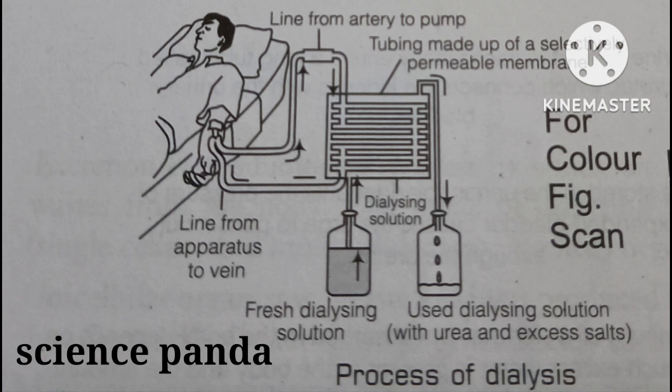During the process of dialysis, the patient's blood is passed through these tubes. As the blood passes, the waste products from the blood move into the dialyzing fluid by diffusion, and the purified blood is pumped back into the patient's body.